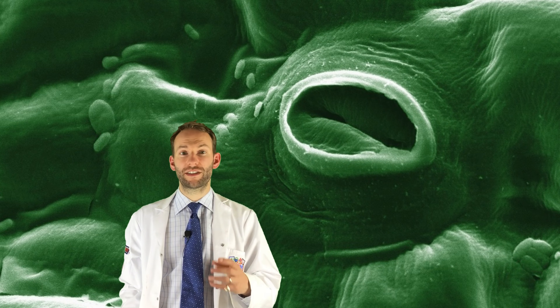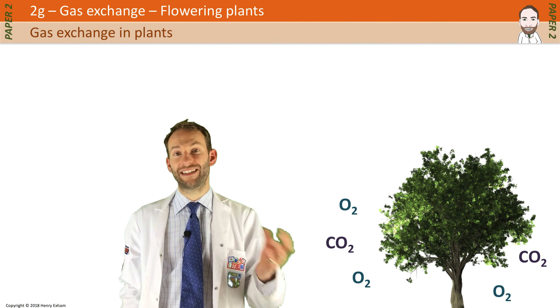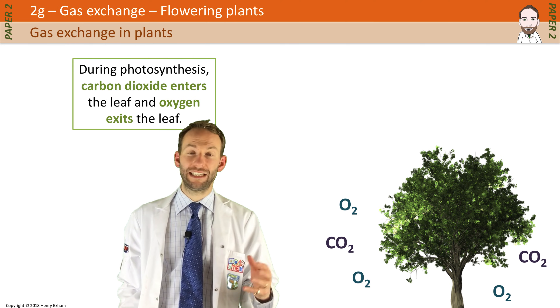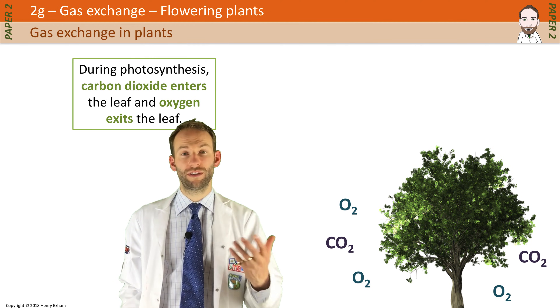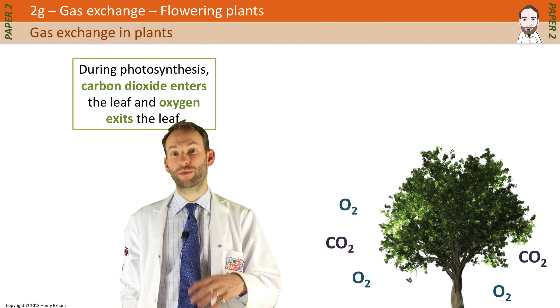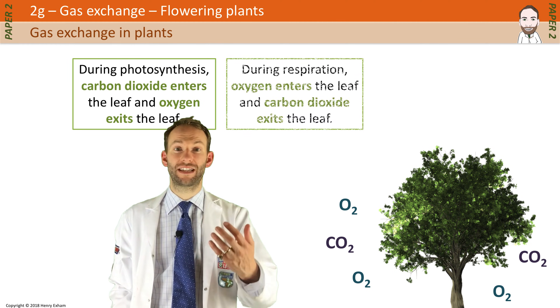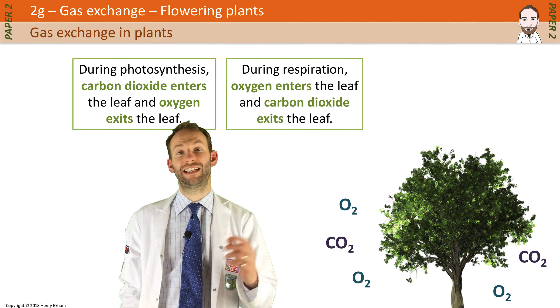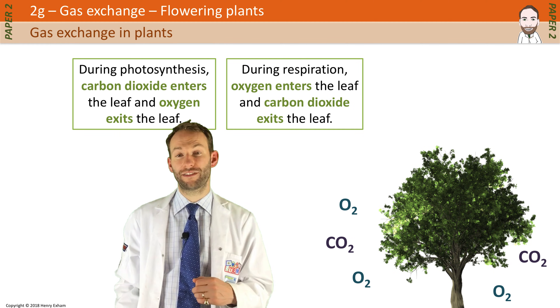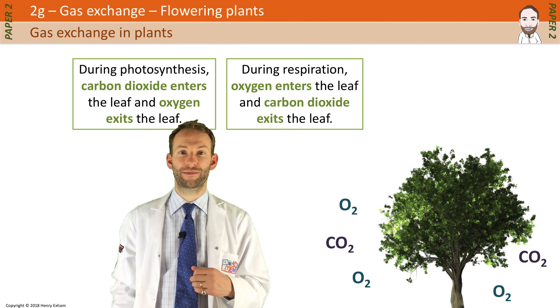During photosynthesis, carbon dioxide enters the leaf and oxygen exits the leaf as a net gas exchange. And during respiration, oxygen enters the leaf and carbon dioxide exits the leaf, if the plant is doing more respiration than photosynthesis.